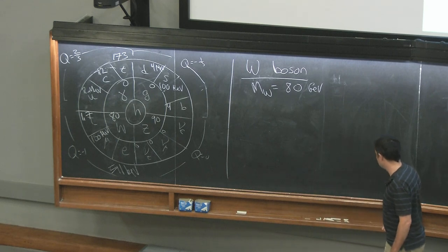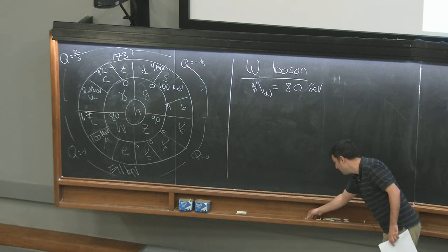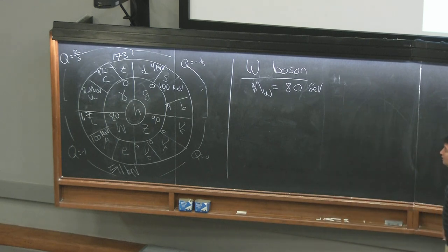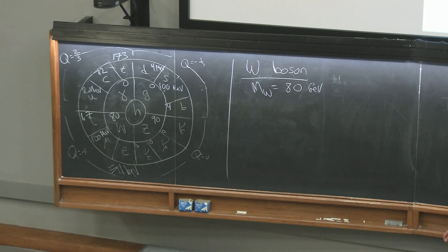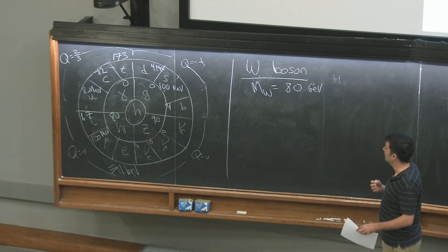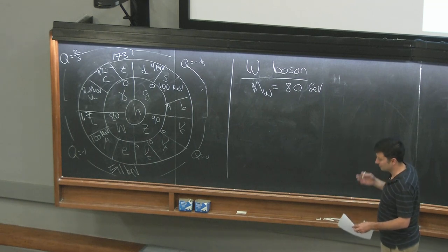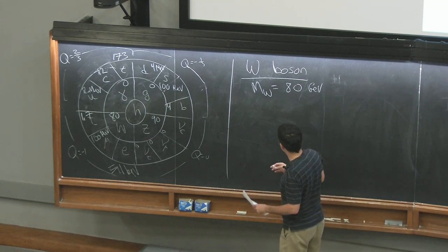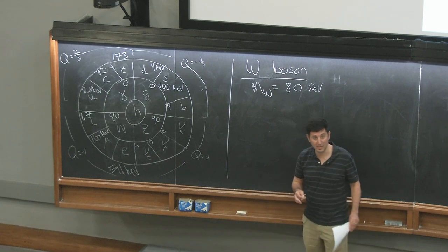We're going to start talking about these particles and understanding them. A lot of these masses aren't so well defined and you have to be a little bit more careful about what we mean by mass — we'll get to that. The W is not ambiguous: 80 GeV. So what can the W decay to?